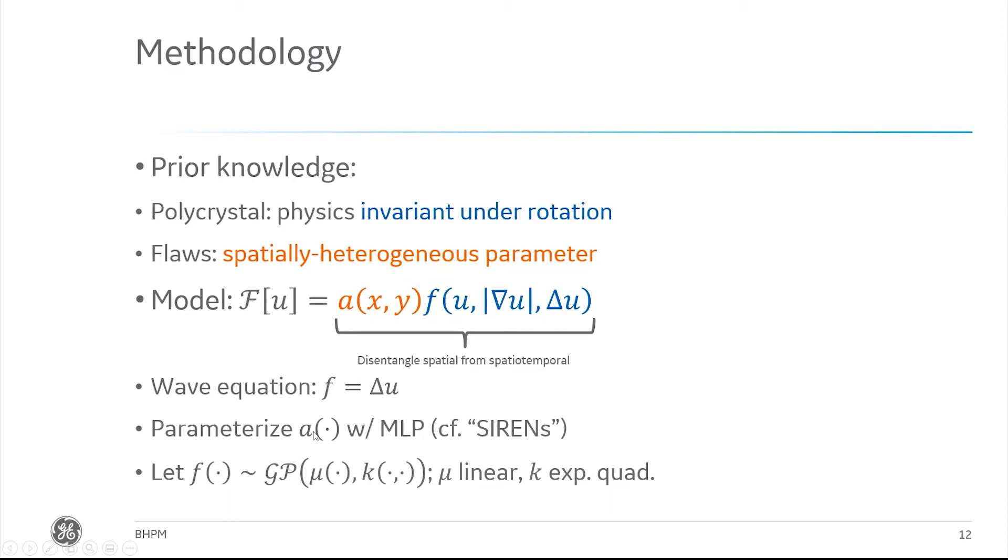I'll comment in passing that this reduces to the wave equation in the case that F equals Laplacian on U. This A is going to be a field that's parameterized with another MLP. You can think of the sinusoidal representation networks that have become quite popular recently. I comment in passing that if F is Gaussian process distributed with a linear mean function and an exponentiated quadratic kernel function, then the product of A times F is also Gaussian process distributed.